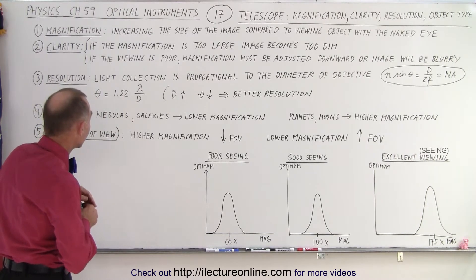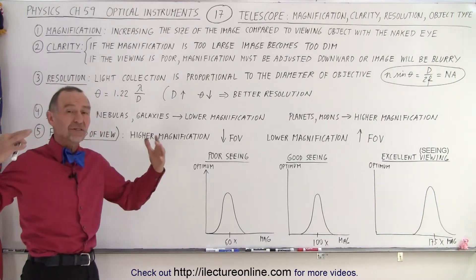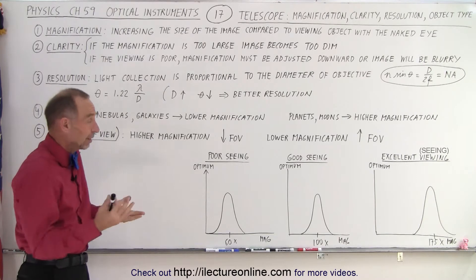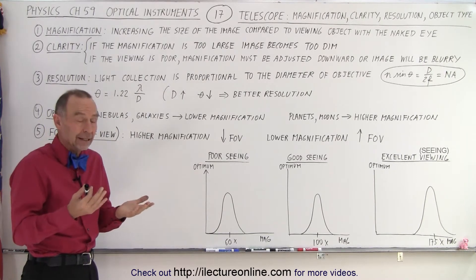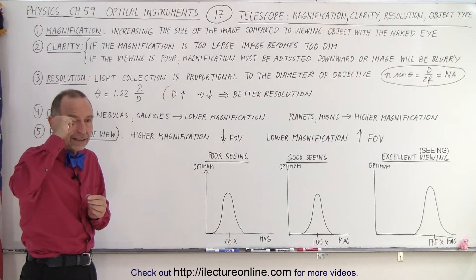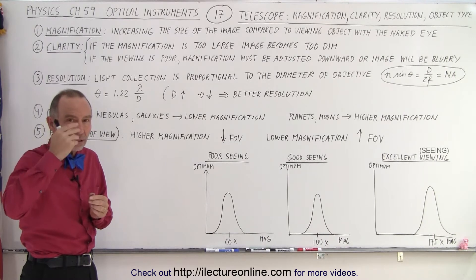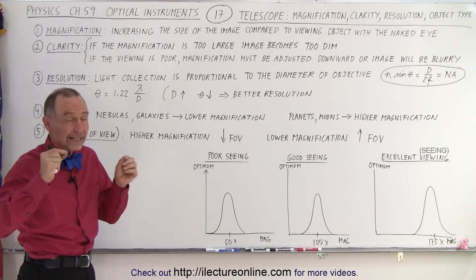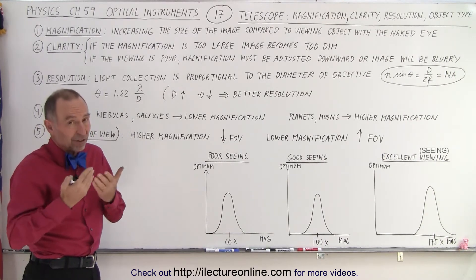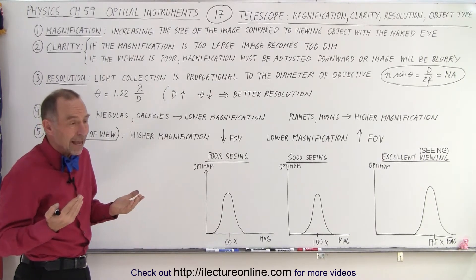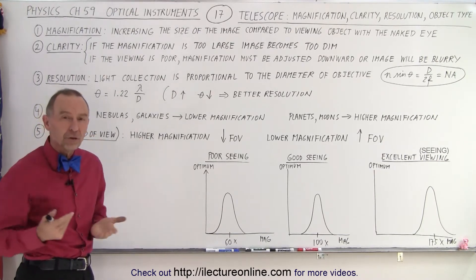So first let's think about magnification. You definitely want to increase the size of the image you look at relative to seeing the object with the naked eye. Typically with the naked eye, the amount of light entering your eye is so tiny that objects that are far away are simply too dim to be seen and they're too small to be able to discern.